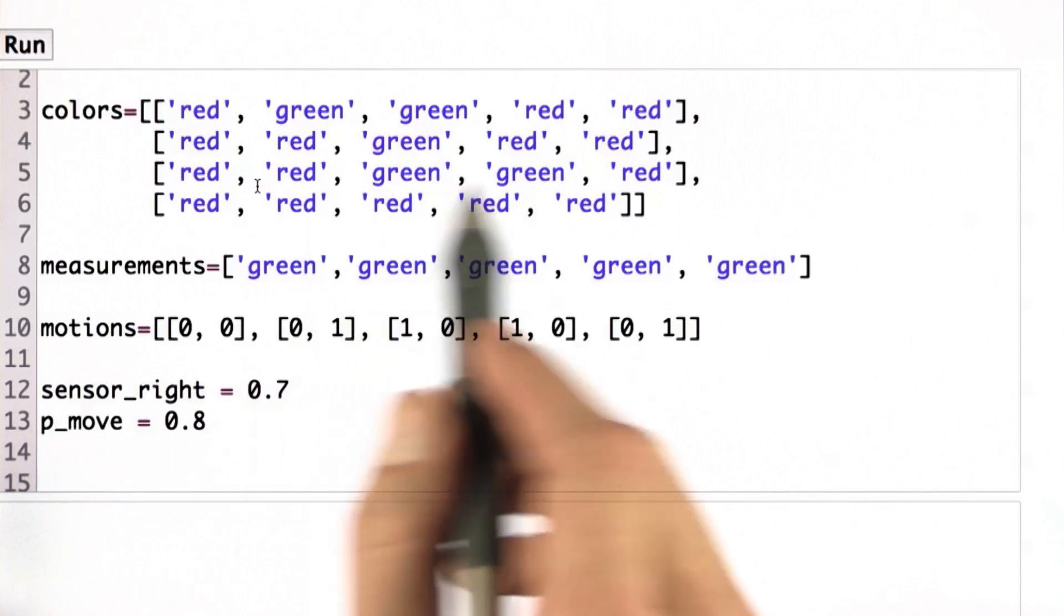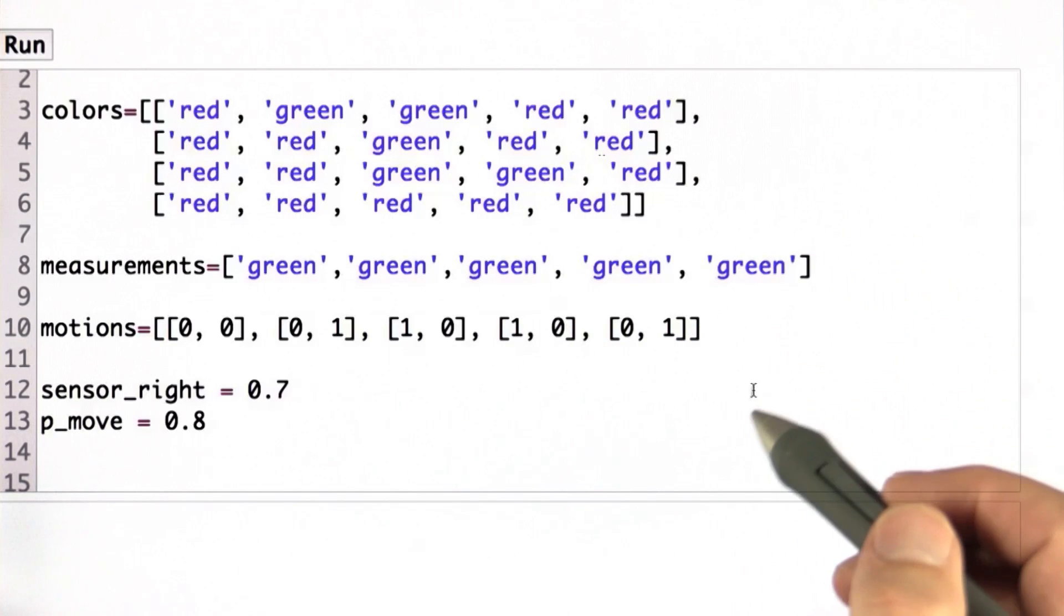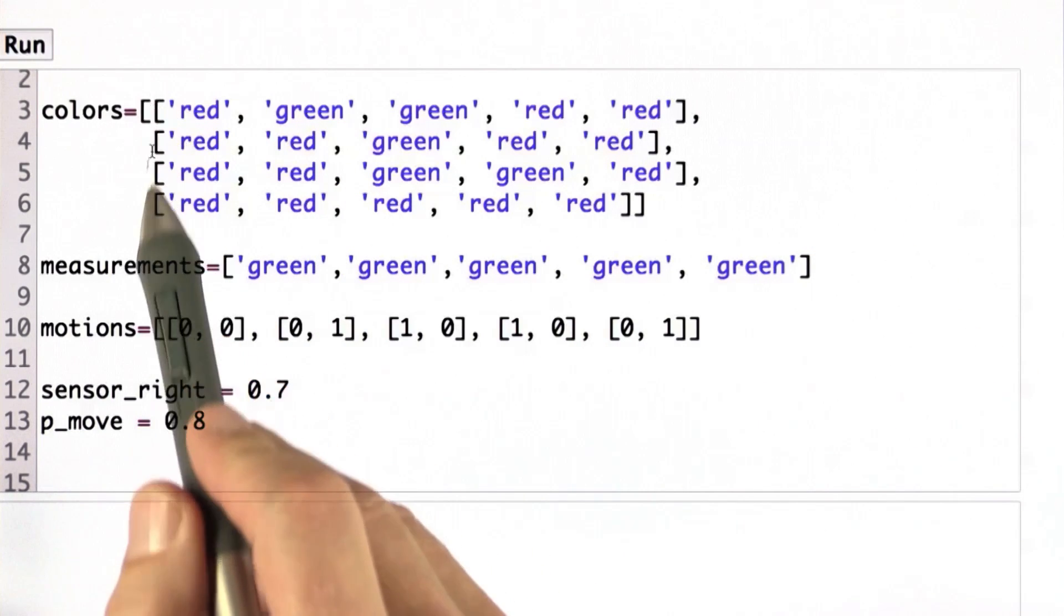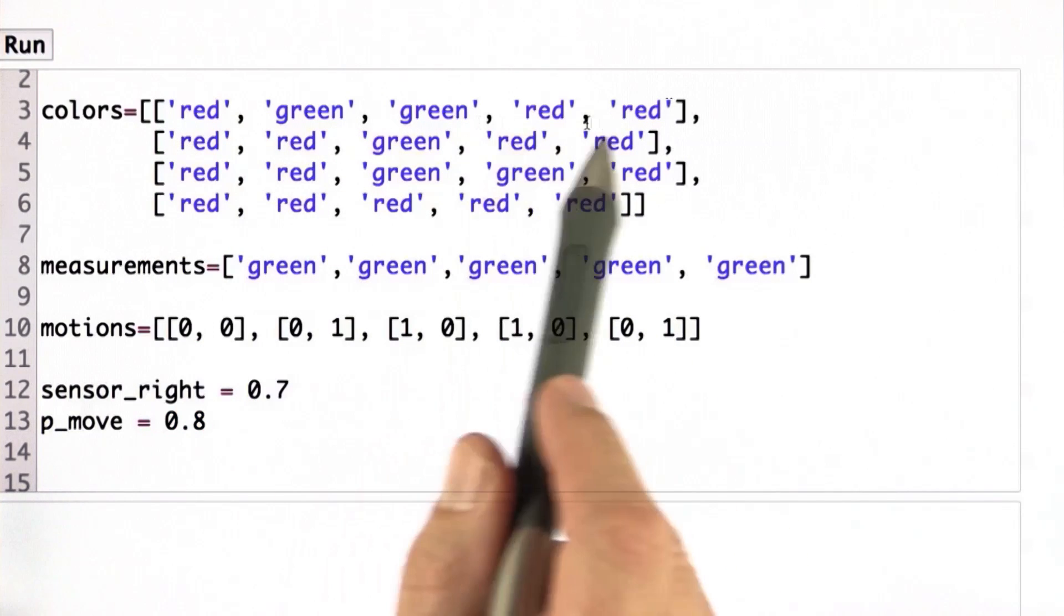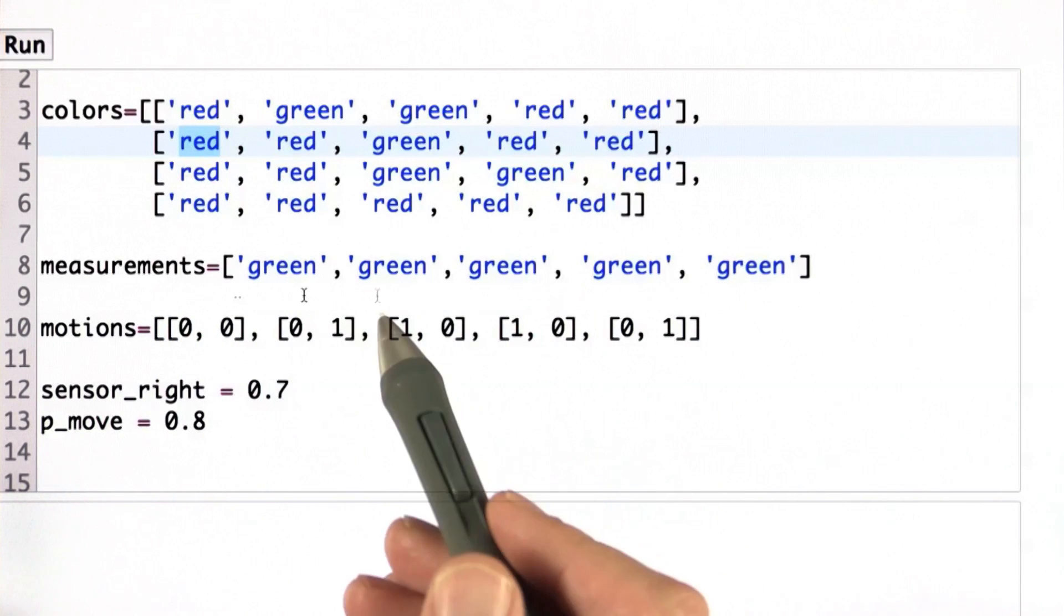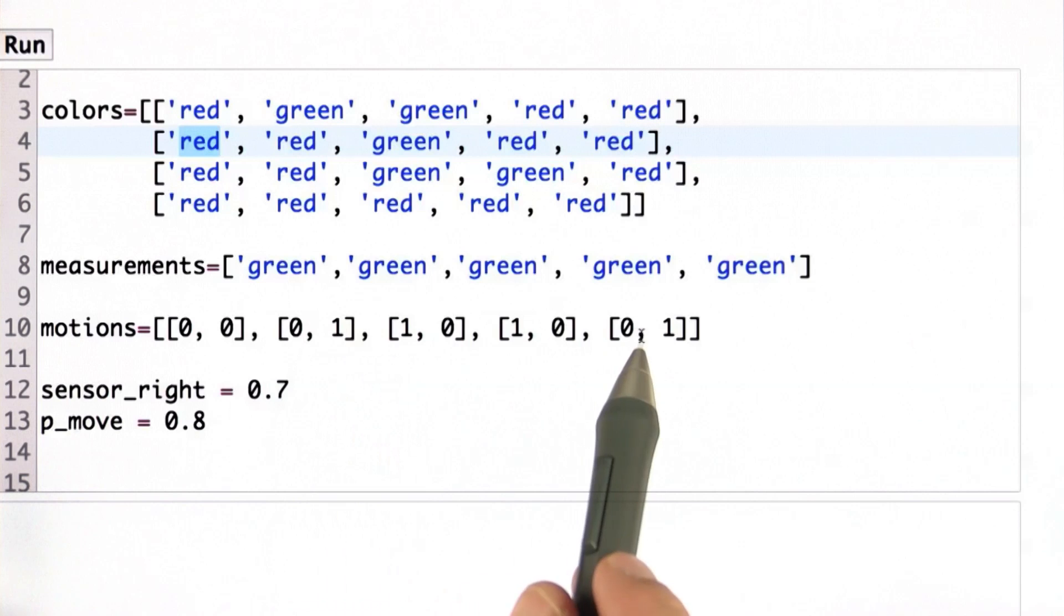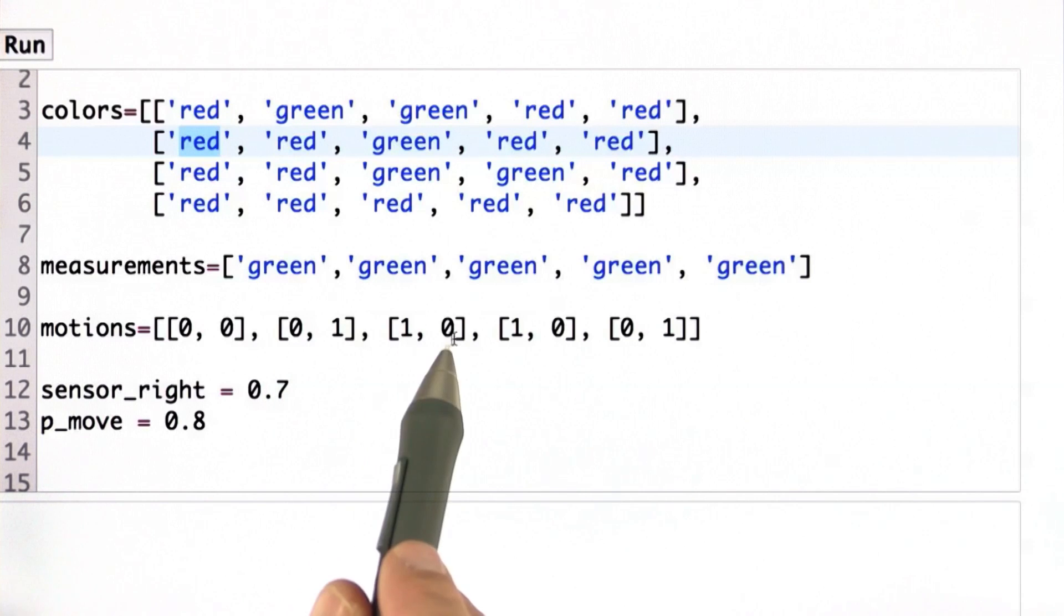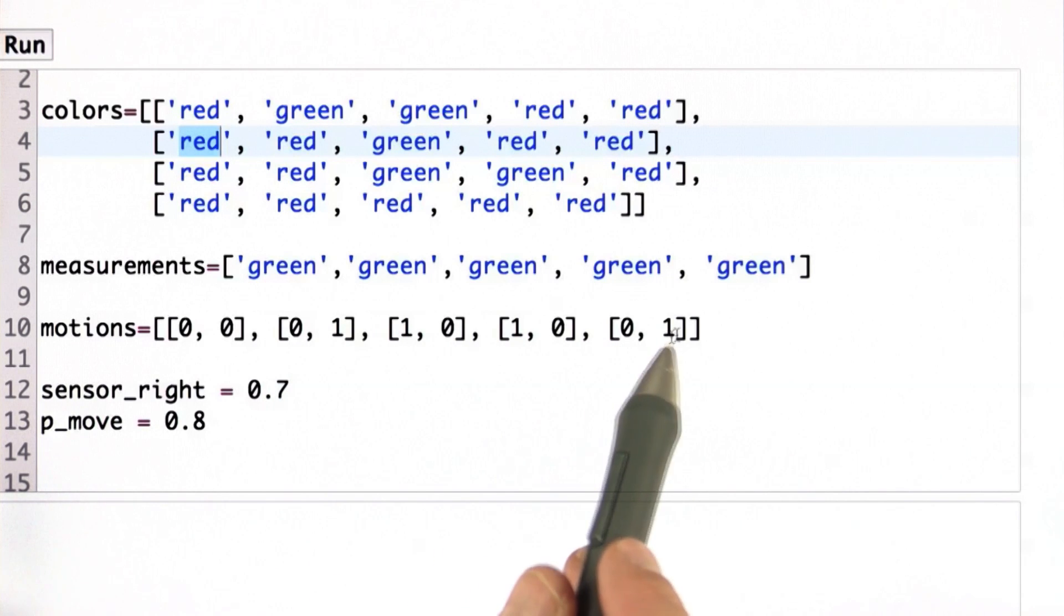Finally, I want your code to execute input as complex as this one. This is a 4 by 5 world, 4 rows, 5 columns, all with reds or greens. There's only two colors. There's a sequence of measurements of five elements and correspondingly a sequence of motions of five elements. All the measurements are green. The motions are don't move at all, move right, move down, move down, and move right again. And then there are certain sensor probabilities and motion probabilities that I can set as well.